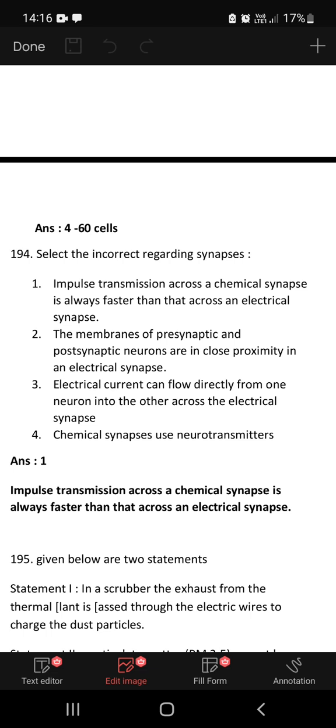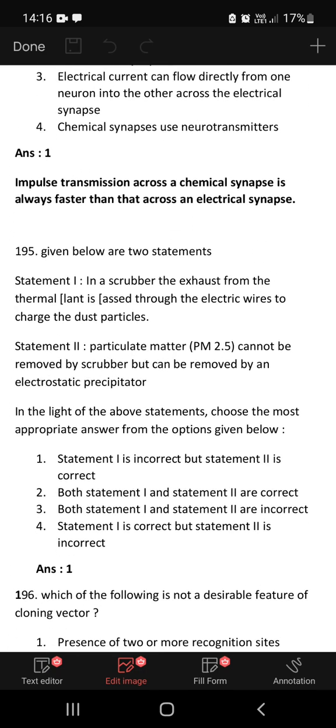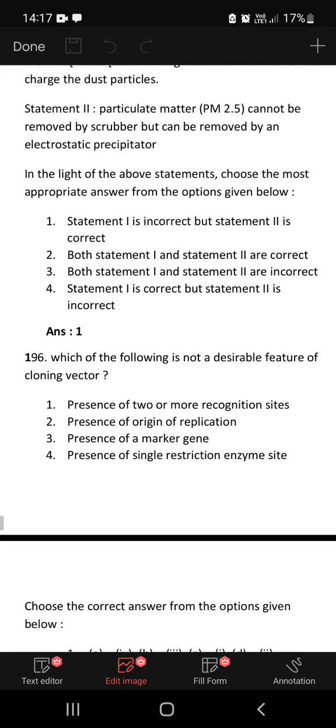Select the incorrect statement regarding synapses. Impulse transmission across a chemical synapse is always faster than that across an electrical synapse. So here they say chemical synapse is faster than electrical synapse. This itself is a wrong statement. It is always an electrical synapse is faster than chemical synapse, the other way around. So first statement itself is wrong. The remaining are all correct statements. 195: In a scrubber, the exhaust from the thermal plant is passed through the electric wires to charge the dust particles. This is wrong statement. Particulate matter PM 2.5 cannot be removed by scrubber but can be removed by an electrostatic precipitator. This is correct statement.